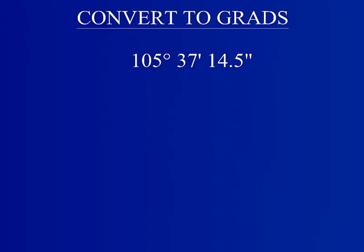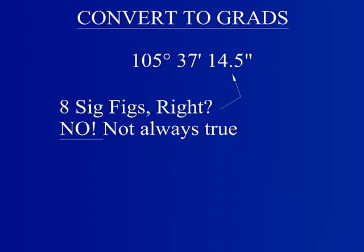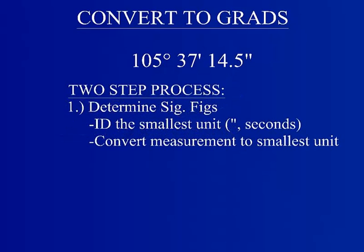The temptation with significant figures when dealing with composite units is to assume that the number of sig figs will be equal to the number of decimal places visually represented. While this is appropriate for numbers reported with one unit, it is not for composite unit numbers. First, convert the measurement to a single type of unit. More specifically, the smallest unit of the composite. Here it is the second.